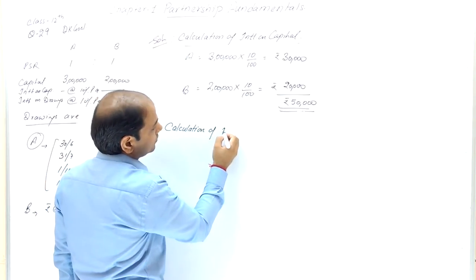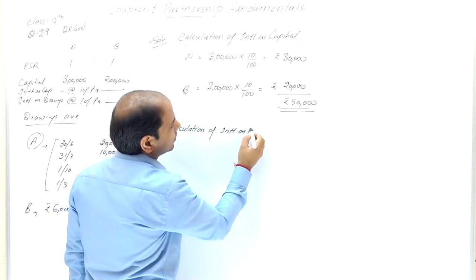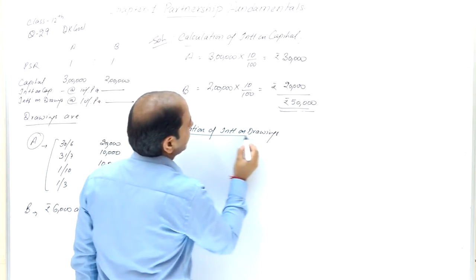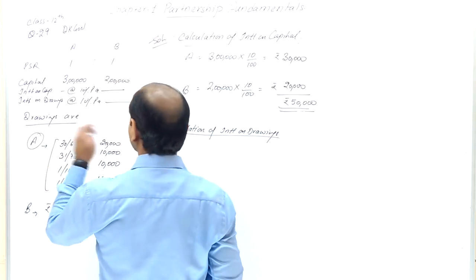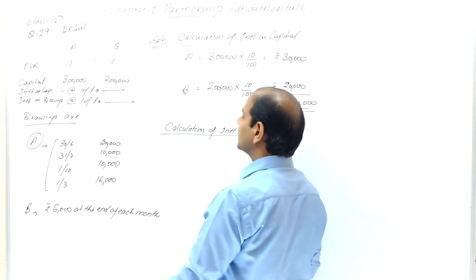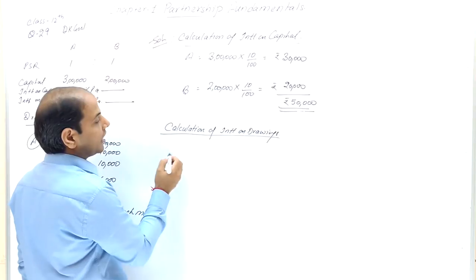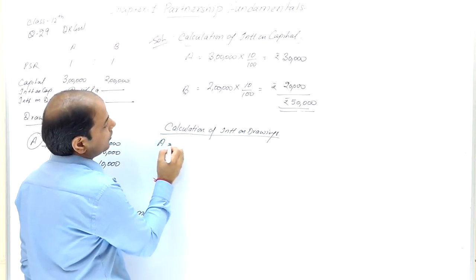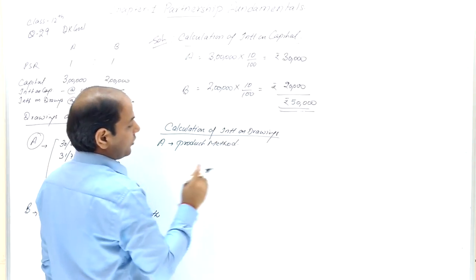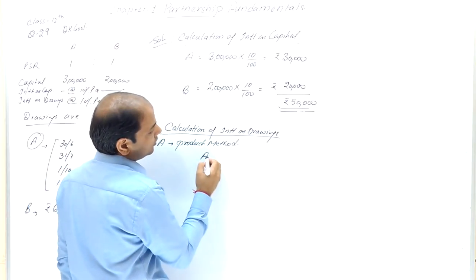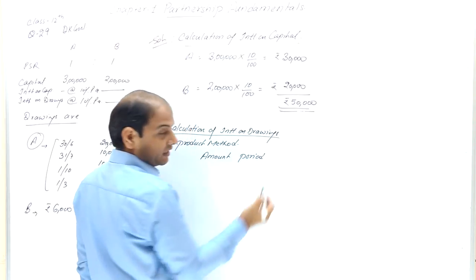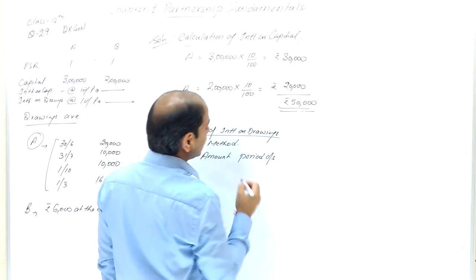Calculation of interest on drawings. For A, we will use the product method. In the product method we need: amount, period outstanding — how many months remain until the year ends — and the product. Let's also note the date, amount, period outstanding, and product in a table.